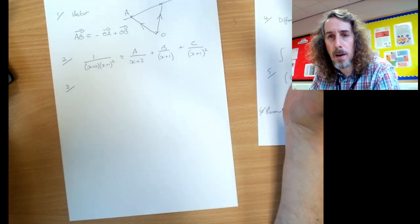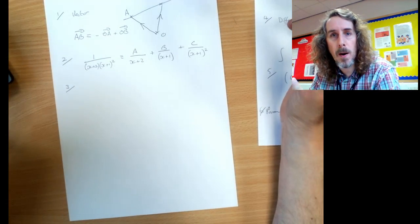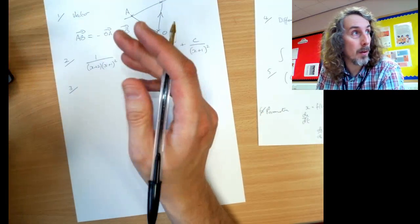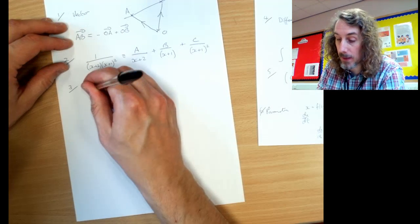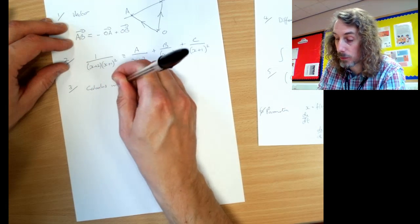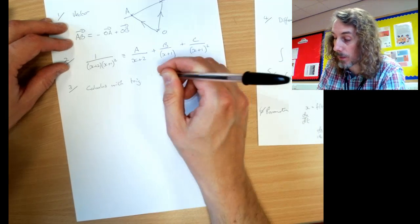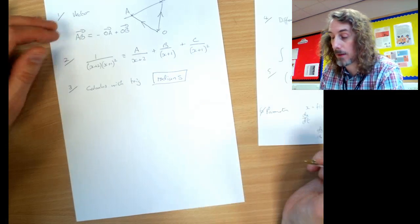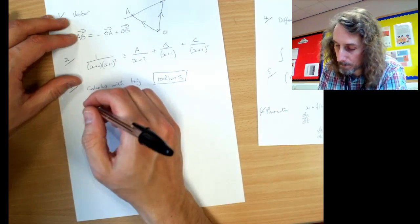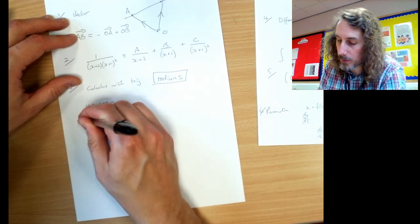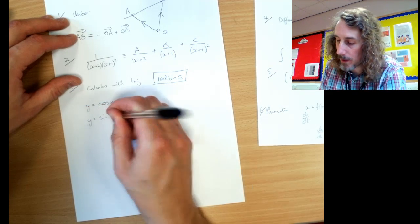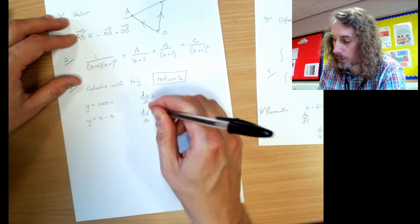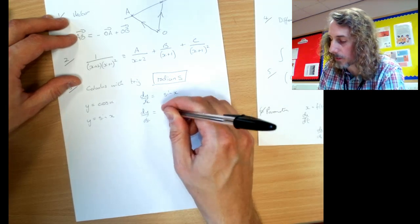There's loads we could talk about differentiation, but we'll mention one thing. If you're doing any calculus differentiation or integration with trig stuff, you must make sure the calculator is in radians. Get it out of degrees and into radians. Remember if Y equals cos X or Y equals sin X, they differentiate to the other one. Cos X goes to sin, sin X goes to cos.